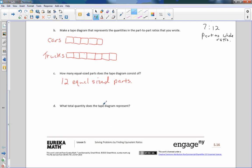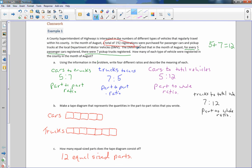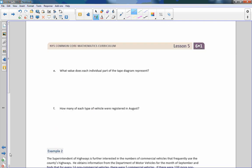Now part D says, what total quantity does the tape diagram represent? And the total diagram that it represents is the 192 vehicles. Part E says, what value does each individual part on the tape diagram represent? In order to determine this, we know that there are 192 total vehicles. We know that there are seven plus the five or 12 pieces in the tape diagram. So if I take 192 divided by 12, 12 goes into 19 once, a remainder of seven, 72. 12 goes into 72 six times. So each square represents 16 cars or vehicles.